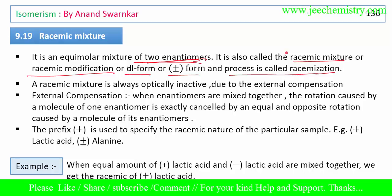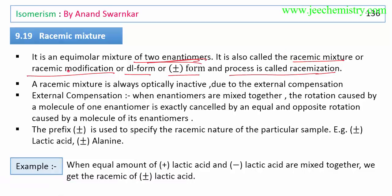These are the alternative names of racemic mixture: racemic modification, DL form, and plus-minus form — these need to be remembered. A racemic mixture is a mixture of two enantiomers, and it is always optically inactive.